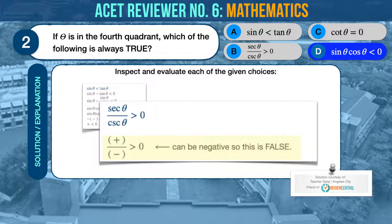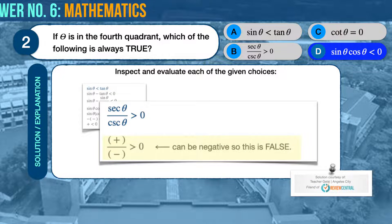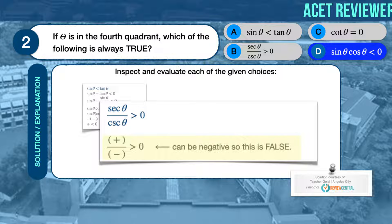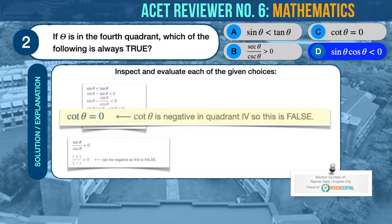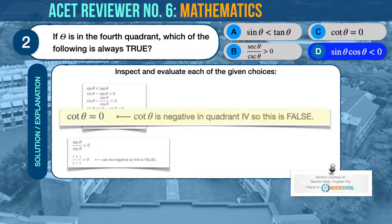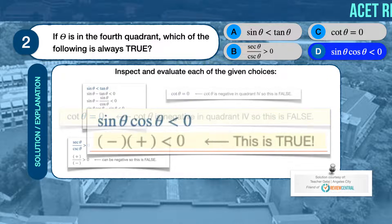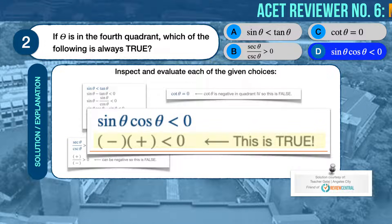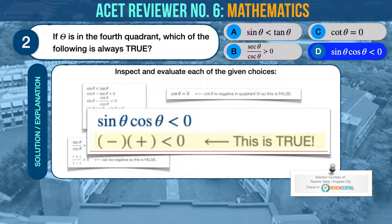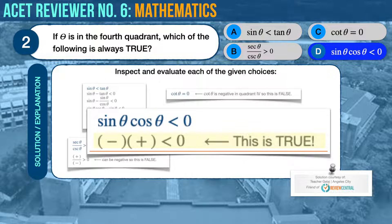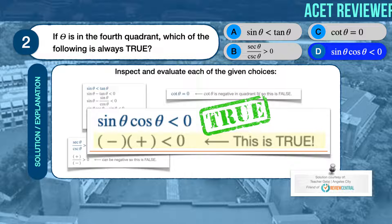Next, secant theta over cosecant theta is greater than zero. With theta in the fourth quadrant, secant theta should be a positive number while cosecant theta should be a negative number. Positive divided by negative will result to negative, and any negative number is not greater than zero. Therefore, option B is also false. Now let us inspect option C, cotangent theta is equal to zero. With theta in the fourth quadrant, cotangent theta should be a negative number, not zero. So option C is also false. Finally, let us inspect sine theta times cosine theta is less than zero. With theta in the fourth quadrant, sine theta should be negative, while cosine theta will be positive. Negative times positive will be negative, and any negative number is less than zero. Option D is true. Therefore, the correct answer is D, sine theta times cosine theta is less than zero.